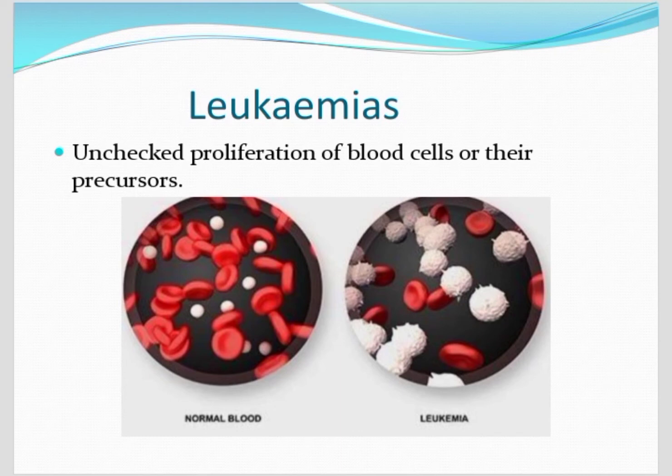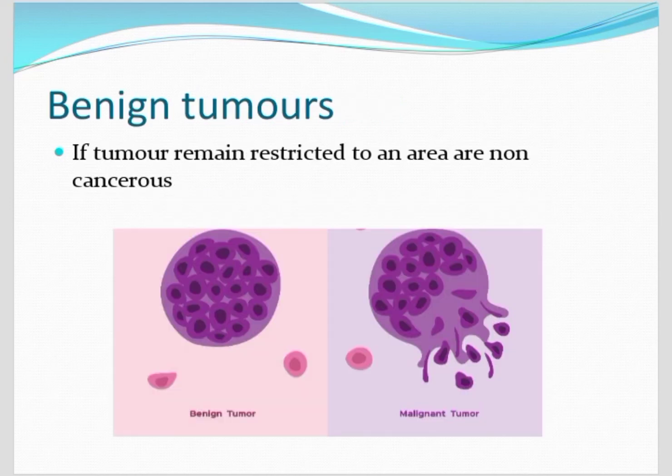The last type is leukemias — unchecked proliferation of the blood cells or their precursors of the bone marrow. These are blood cancers, as we generally call them. You can see in the diagram leukemia and the normal blood cells. Also, benign tumors remain restricted to an area and are non-cancerous, while malignant tumors will spread to other organs. Thank you for watching, please subscribe to our channel.